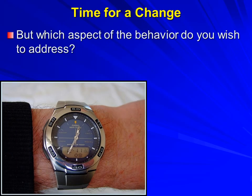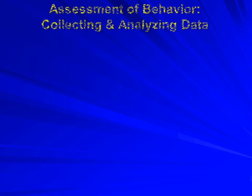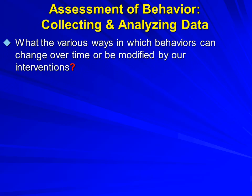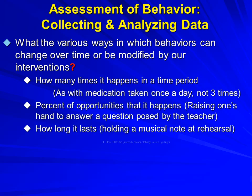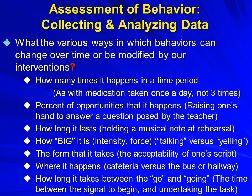Let's say that we decide we wish to modify a behavior in some manner. There are a number of ways that actions can be changed. Here are some examples of different foci for our data collection: how many times the action happens during a certain time period; the percent of opportunities that it happens — such as what percentage of times a question was asked did the youngster raise their hand; how long does the behavior last; how big and powerful is it; and the form that it takes, as in the acceptability of one's handwriting script.